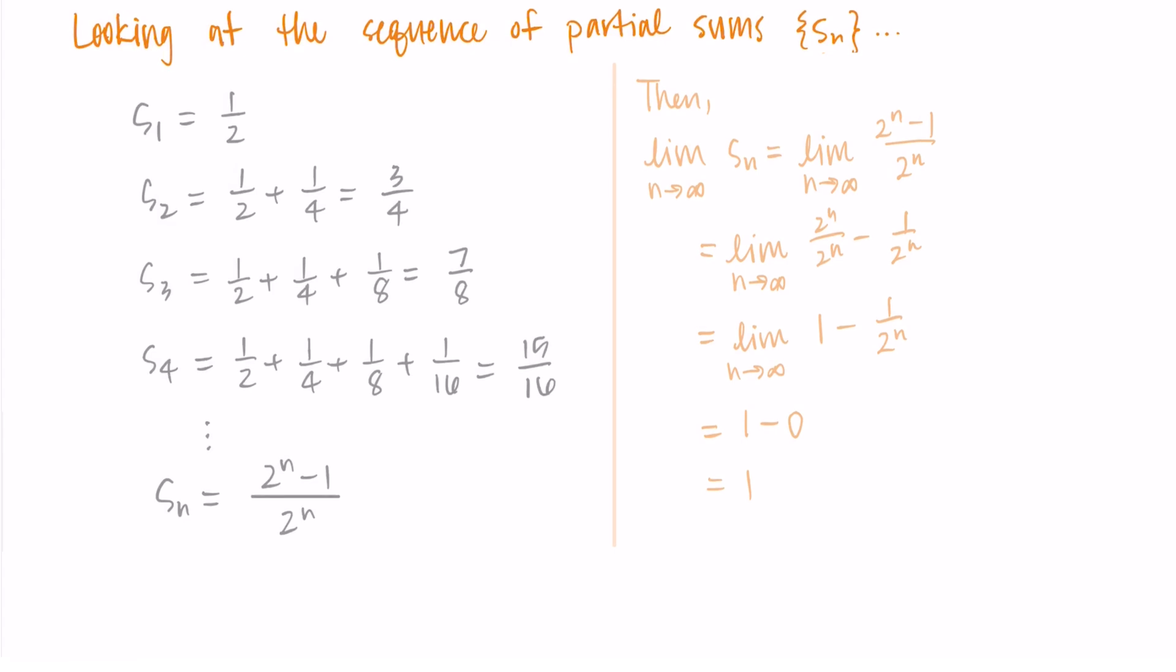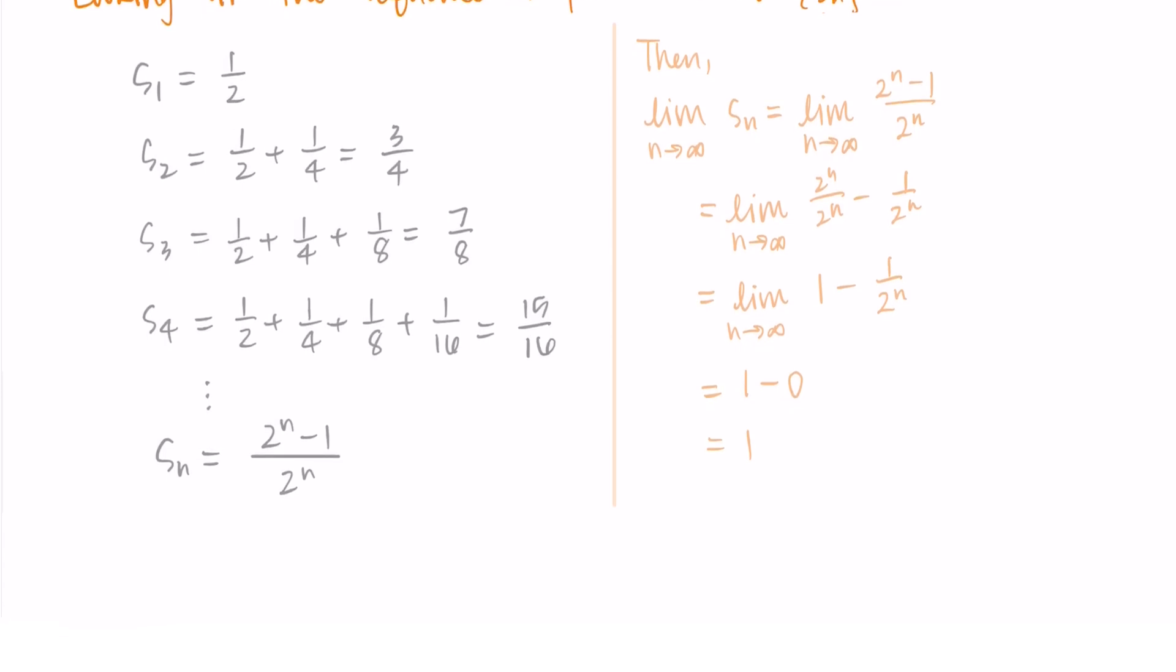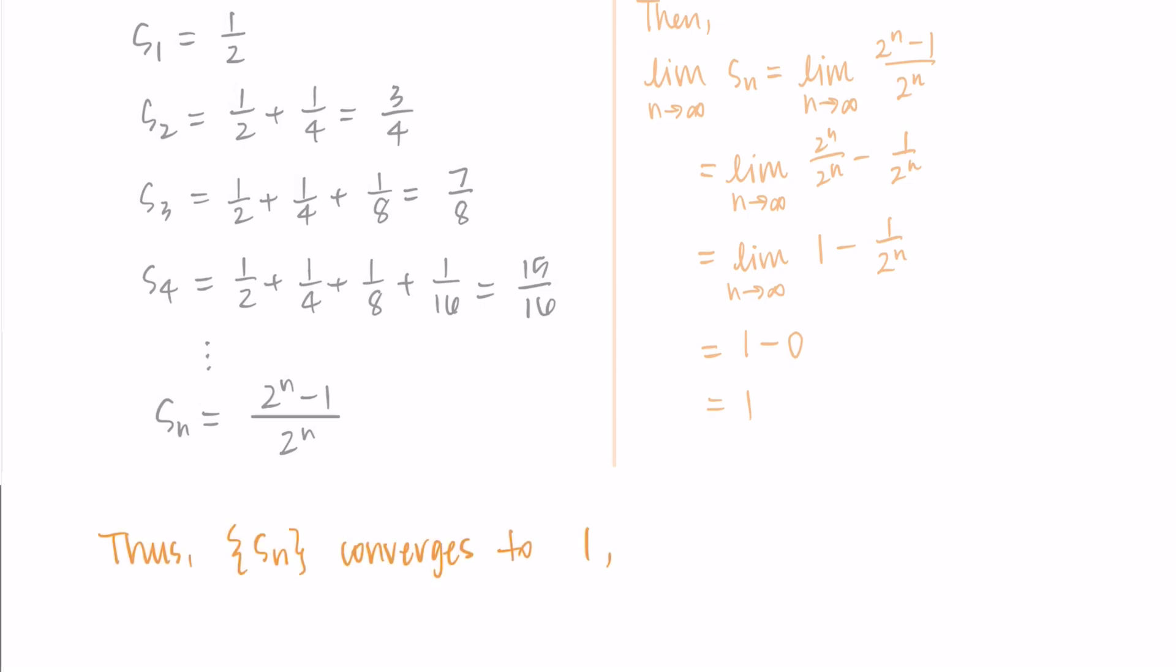And this confirms that the sequence of partial sums converges to 1. So when we know that the sequence of partial sums converges, this tells us that the infinite series converges. Basically we've taken the limit as n approaches infinity and we see that those partial sums, where we're summing up n terms, goes to 1. And so this lets us know that if we were to sum up infinite terms, which is more than n, we would also be going to 1.